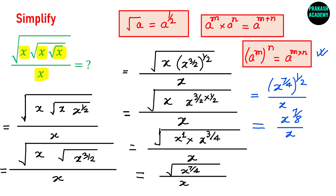Now the last rule: a raised to the power m divided by a raised to the power n is simply a raised to the power m minus n. So this becomes x raised to the power 7 by 8 minus 1, because here we have x raised to the power 1. This gives x raised to the power negative 1 by 8, which can also be written as 1 by x raised to the power 1 by 8.